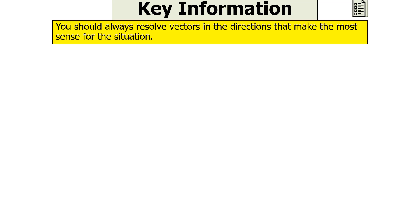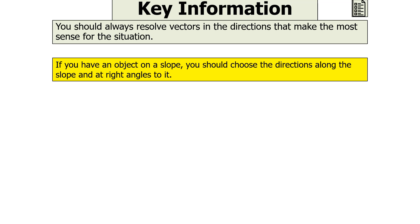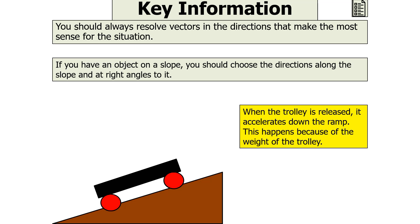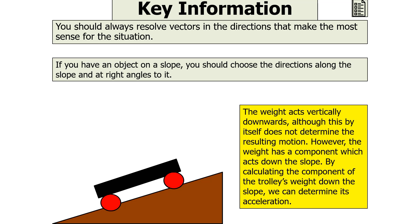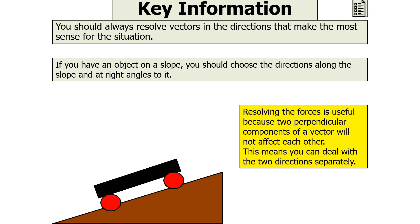You should always resolve vectors in the directions that make the most sense for the situation. If you have an object on a slope, you should choose the directions along the slope and at right angles to it. For example, when a trolley is released, it accelerates down the ramp because of its weight. We know the weight acts vertically downwards, but by itself this does not determine the resulting motion. The weight does have a component which acts down the slope, and by calculating that component we can determine the acceleration. Resolving forces is useful because the two perpendicular components will not affect each other.